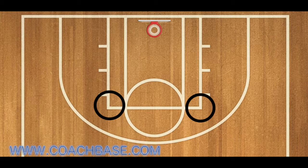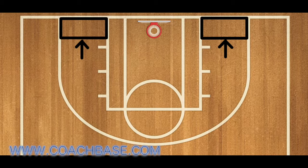Here's an area on the court that not many coaches know about — it's called the Russian spot. It's called that because the Russian national team used to use this area to destroy zone defenses. It is located between the three-point line and the key along the baseline. If you can get a player with the ball in that area, you will have a very good chance of beating a zone defense.